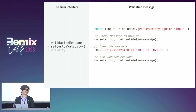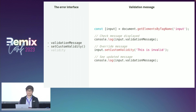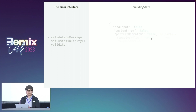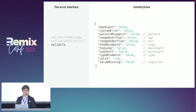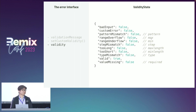It can be overwritten with the setCustomValidity method. If we want to know more about the error, we can also check the validity property. This property represents the valid state of the input, with each boolean representing the result of a different validation attribute.